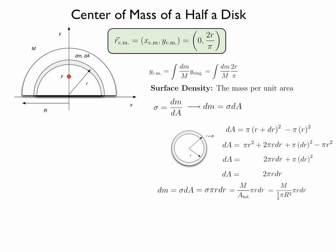After canceling pi and rearranging the terms, we finally see that the mass of half a ring will be equal to the mass of that half a disk divided by the radius squared multiplied by 2 r dr, where little r is the radius of the ring.